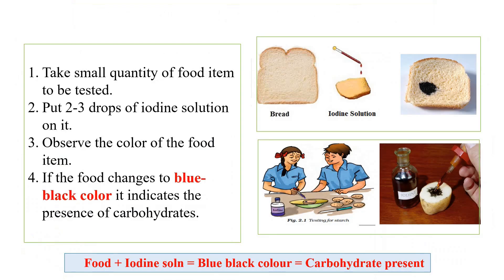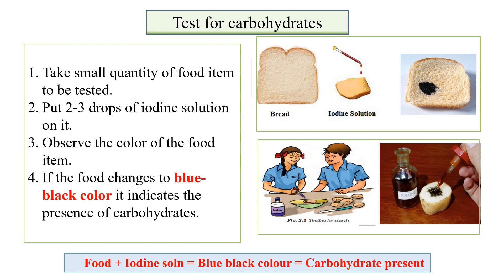Now we will do a simple test to check whether food items contain carbohydrates. Take a small quantity of the food item to be tested — here we are using bread and potato. Put two to three drops of iodine solution on it and observe the color. If the food item changes to a blue-black color, it indicates the presence of carbohydrates. Remember: food + iodine solution → blue-black color = carbohydrates present.